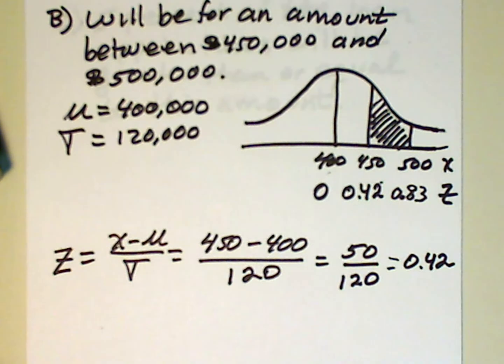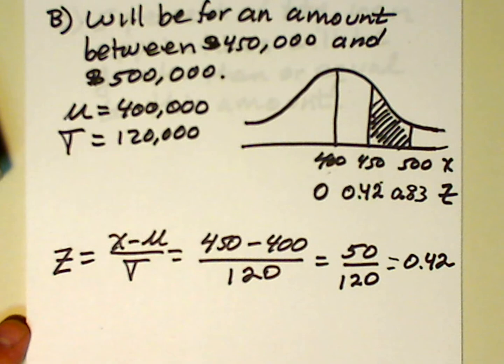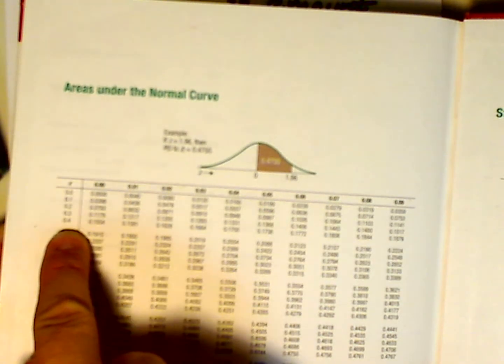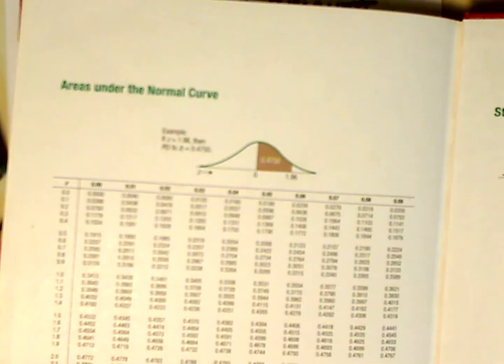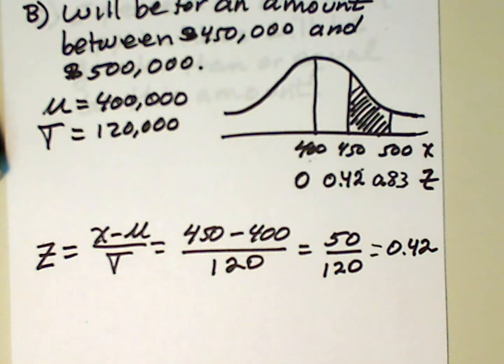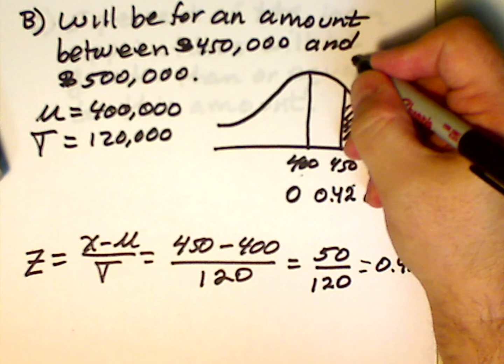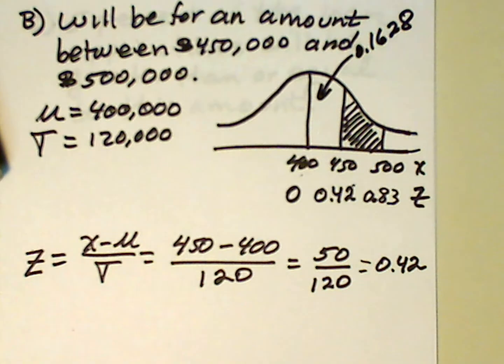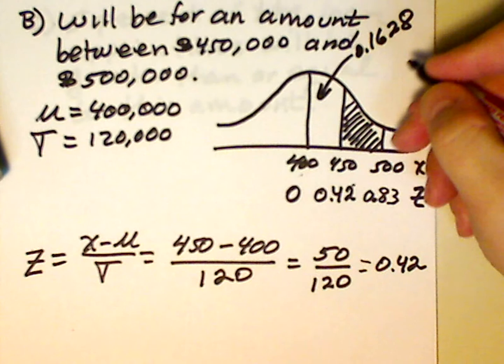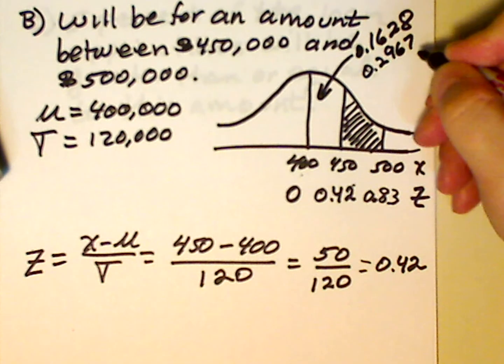So now we need to find an area associated with 0.42. And if you go down the table, I believe it'll turn out to be 0.1628. But let's just double check that. So 0.4, we're down the Z column to 0.4. And we go over to 0.02. And we see that indeed it's 0.1628. So let's make a notation of that. So this is 0.1628. And we know that the area from 400 to 500 is 0.2967. We got that in the last problem.